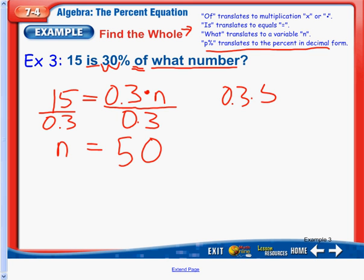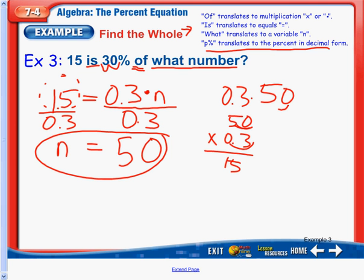Now, plug it back in to check our answer. 0.3 times 50. And seeing that we have a 0 here, if we did 50 times 0.3, this 0 is going to move our decimal over 1. We can move our decimal over 1 here. 3 times 5 is 15. And 15 is what's over here. So, we do have the right answer, and n equals 50. It's always good to check your answer. So, if you're not confident with it, that'll give you a yes or no if you got it correct.